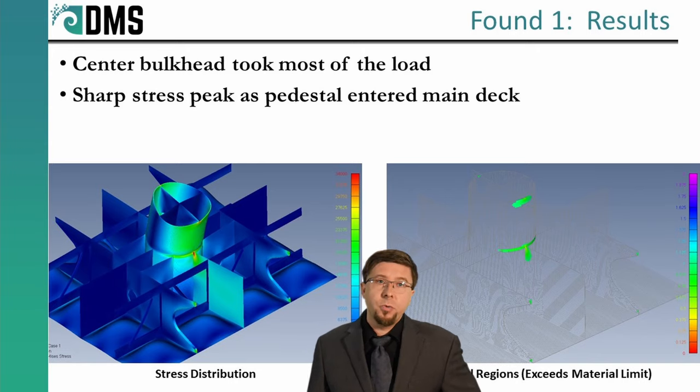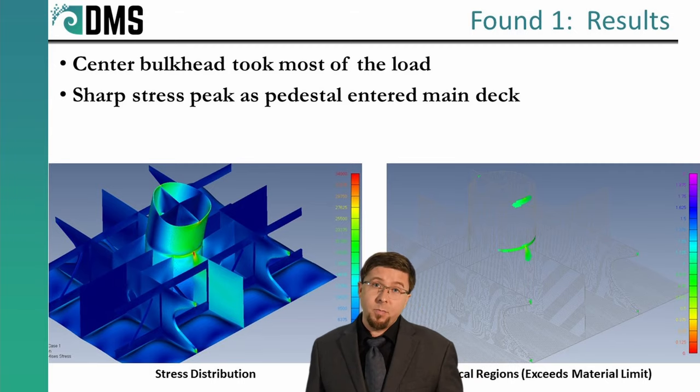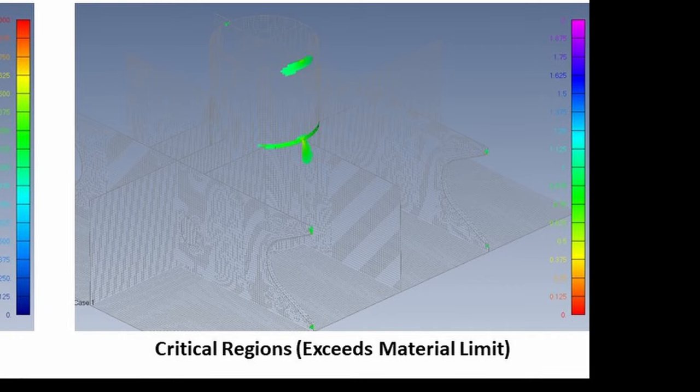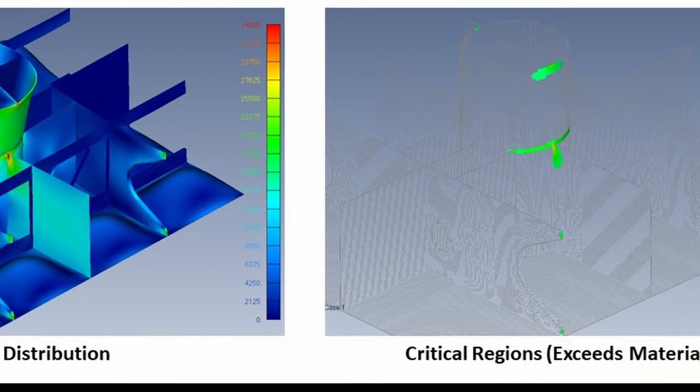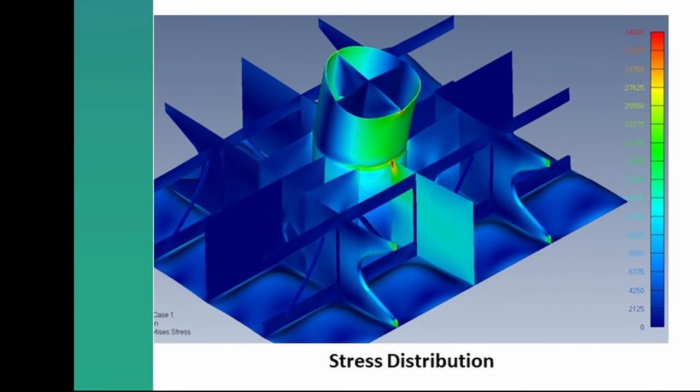Let's see if it worked. Well, the stress patterns show a different story. The center bulkhead took most of the load, with little action on the side bulkheads. The critical stresses also showed a sharp peak just as the pedestal entered the main deck. Many parts of this structure were vastly underutilized and the side longitudinals did little to distribute the loads from the crane. So, you have a good start here, but there's a lot of room for improvement.